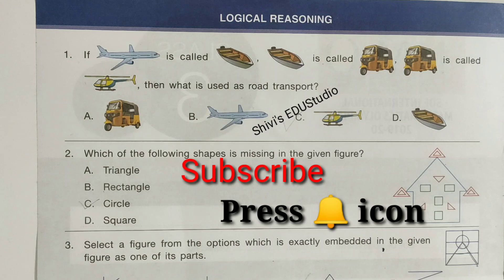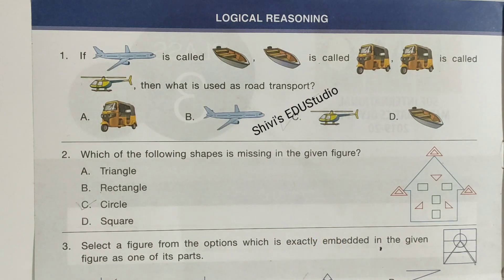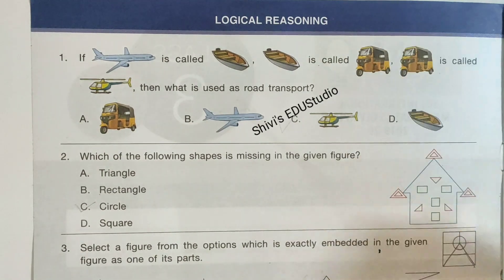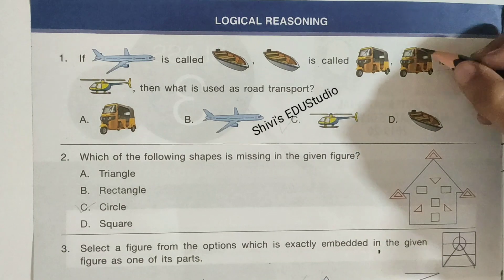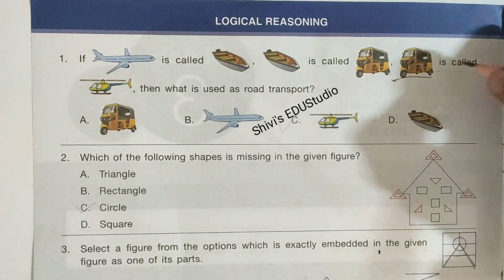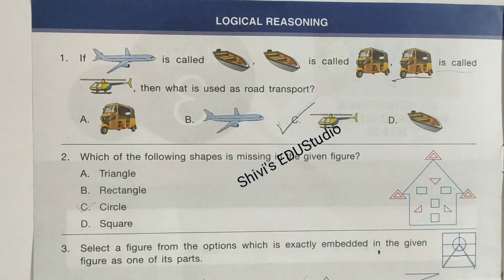First section is logical reasoning. Question number 1: If aeroplane is called boat, boat is called auto, auto is called helicopter, then what is used as road transport? Road transport is auto, and auto is called helicopter. So the answer is option C, helicopter.